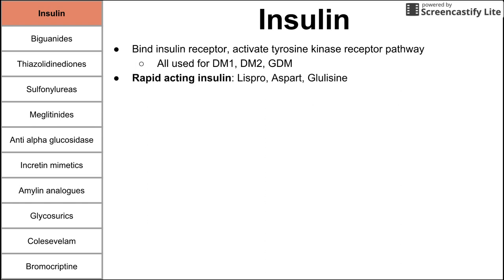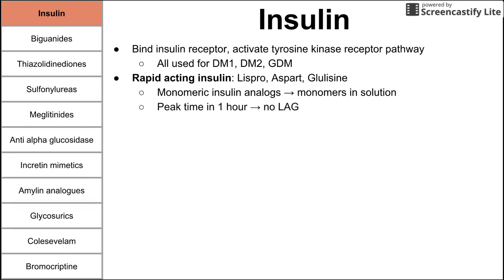We're going to start with the rapid-acting insulins. These are lispro, aspart, and glulisine. These are monomeric insulin analogs — they are monomers in solution. They break down pretty quickly, and that's why they're rapid-acting. The peak time is one hour, and there's really no lag before these rapid-acting insulins start to take effect. So that lag is a mnemonic that can help you remember lispro, aspart, and glulisine.